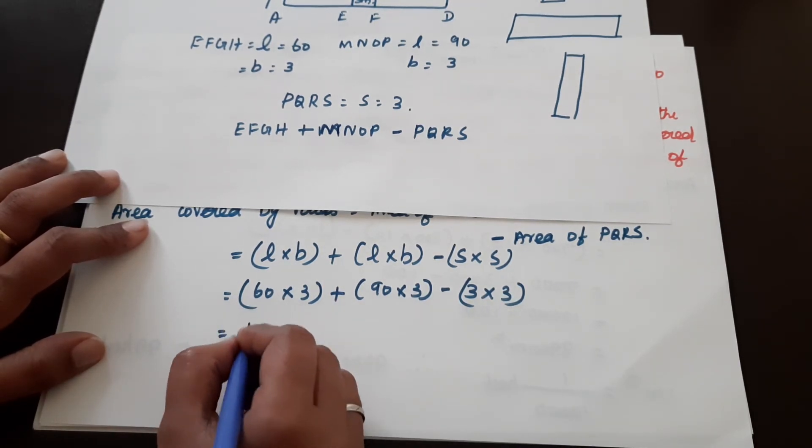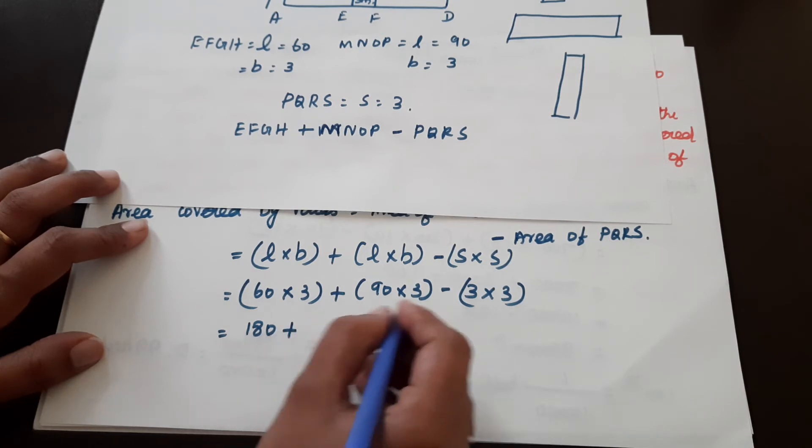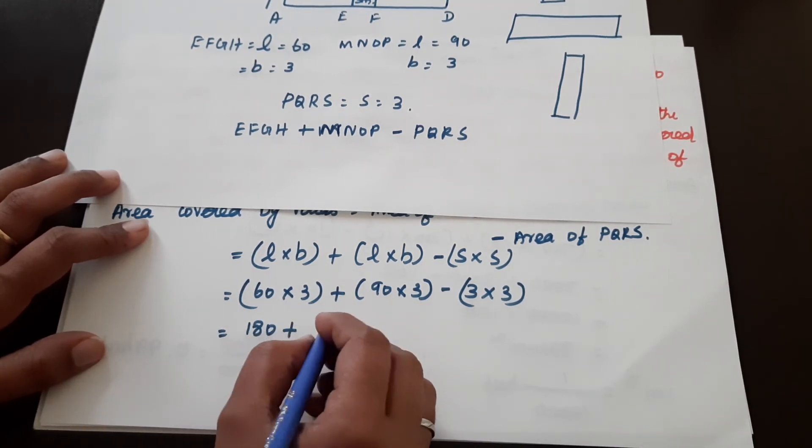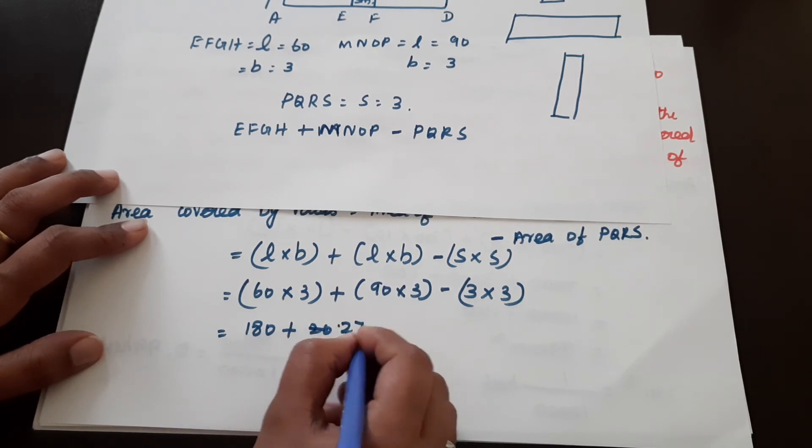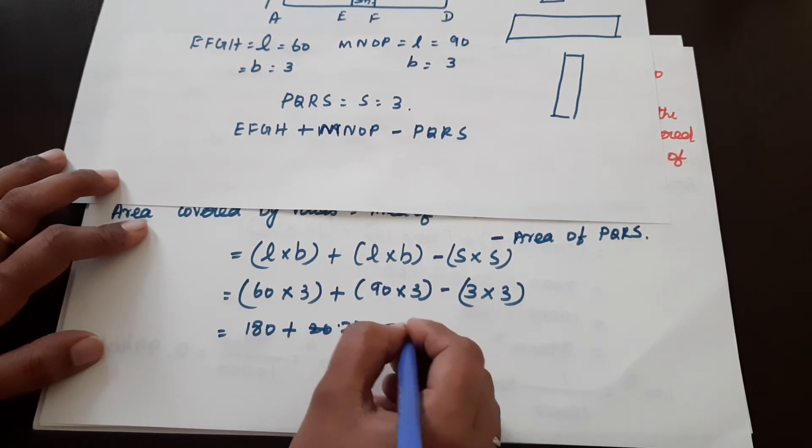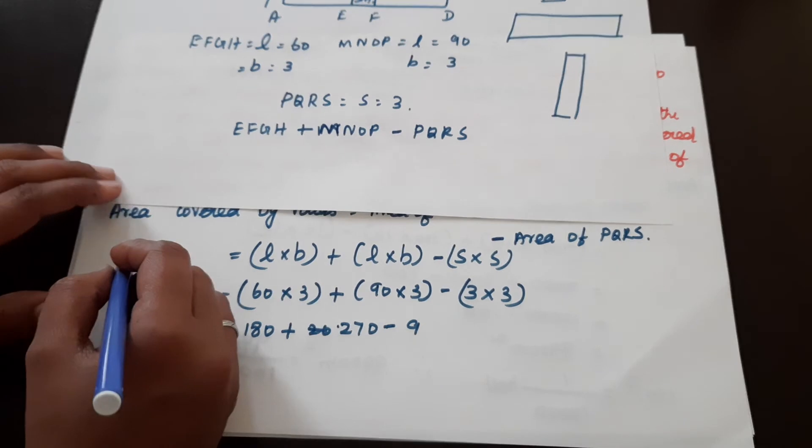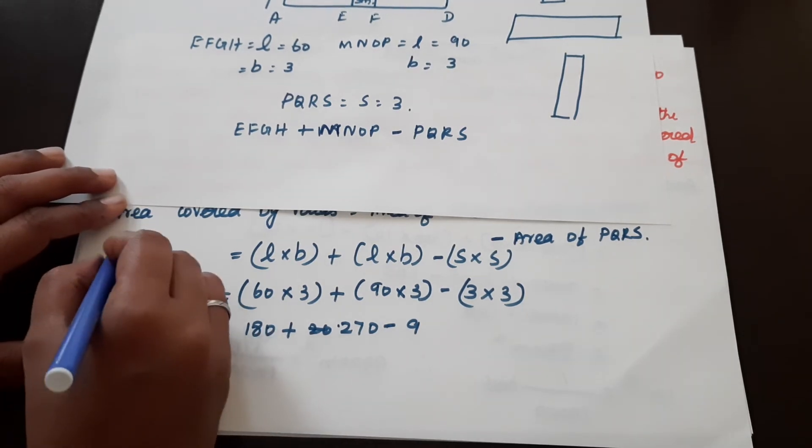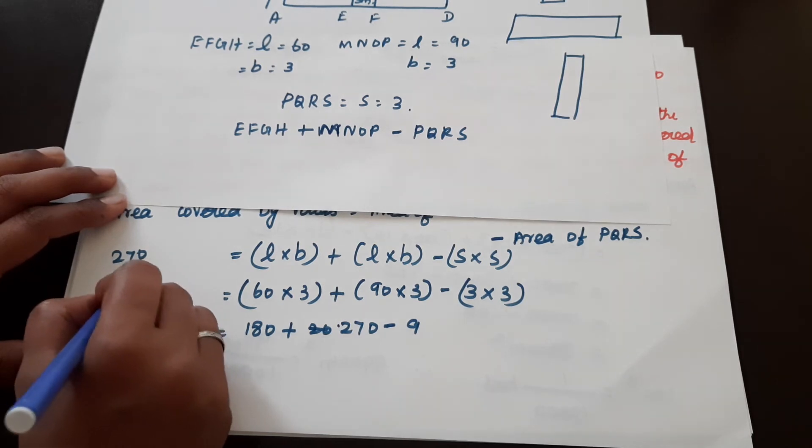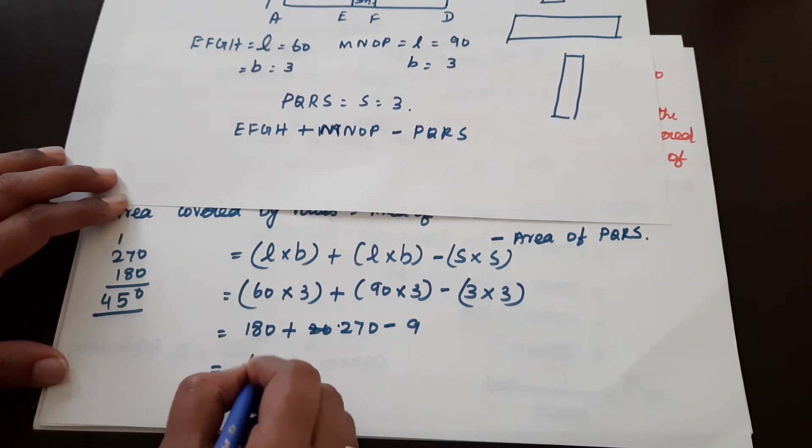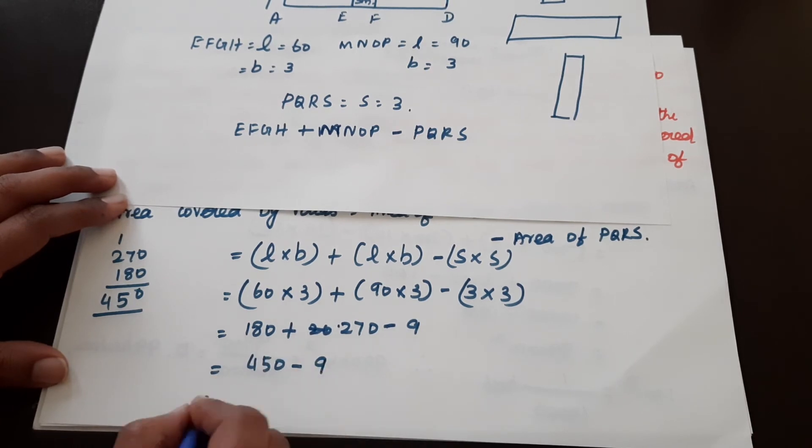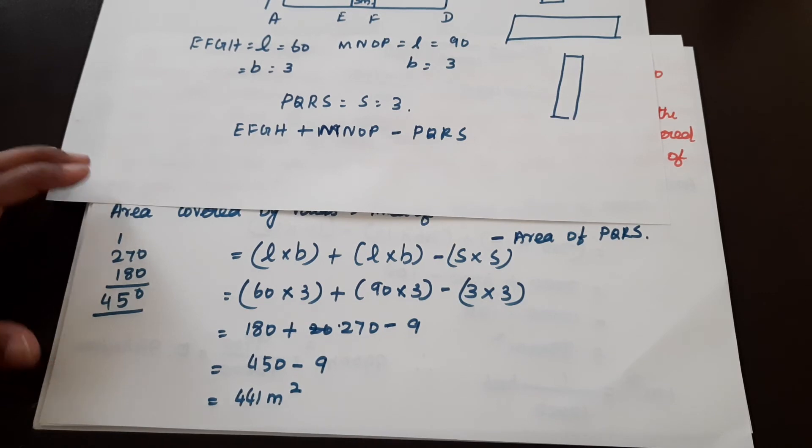So, here 60 into 3, 180 plus 90 into 3, 270 minus 3 into 3, 9. So, 180 plus 270, 450 minus 9. So, 441 meter squared.